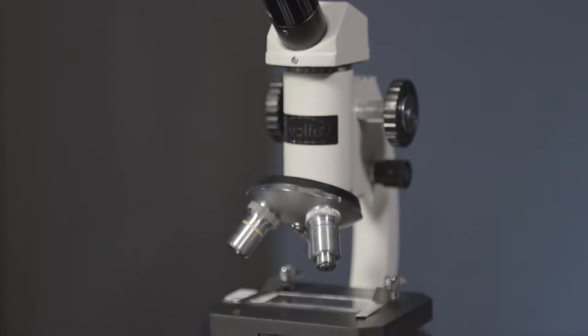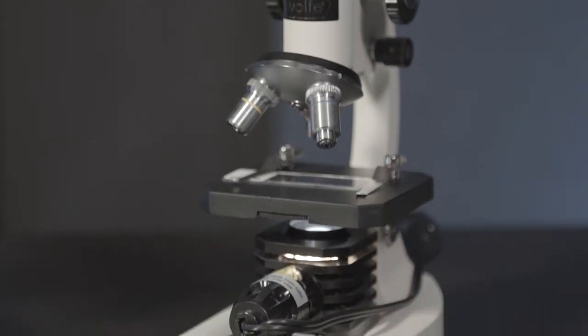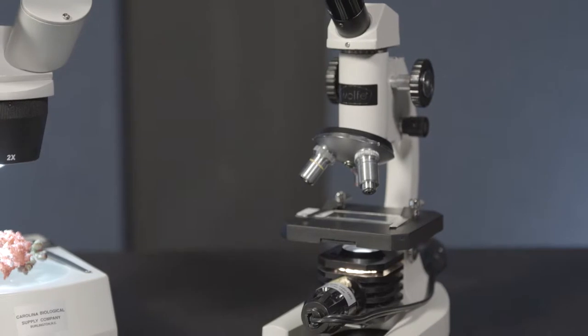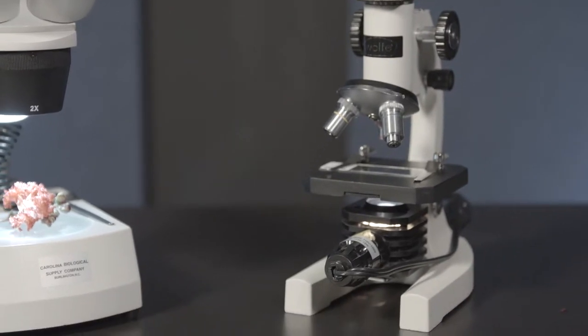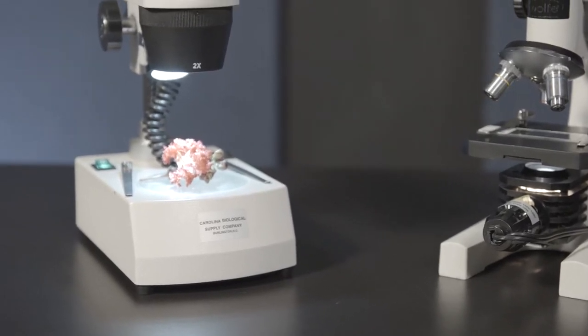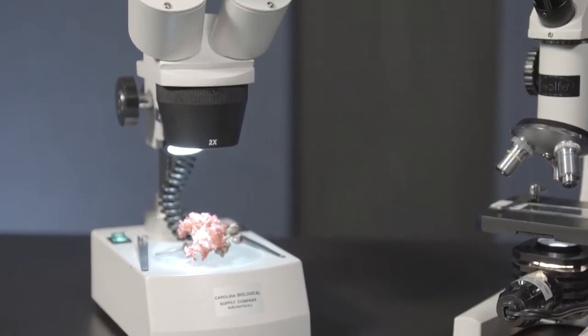Compound microscopes provide higher levels of magnification and are used for viewing micro-sized specimens that are thin enough to allow light to pass through them. These include microorganisms, thin slices of tissue samples, and cell structures.